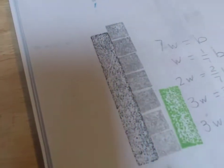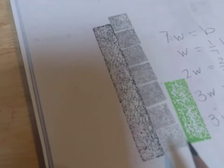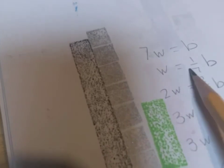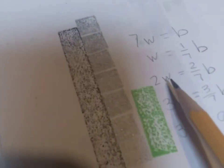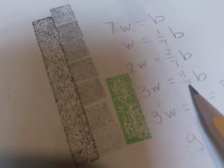That's why we brought in our whites, because here the whites fit easily into seventh, and we can see that seven whites equal B, so one white is one-seventh of B, and then two whites would be two-sevenths of B, and three whites would be three-sevenths of B.